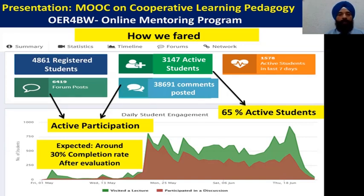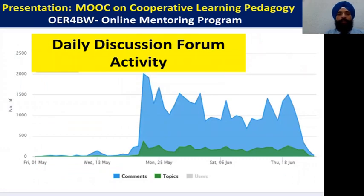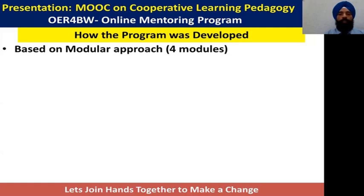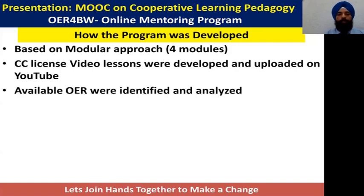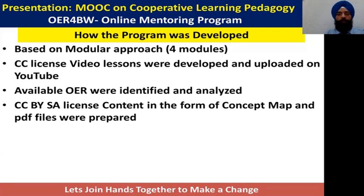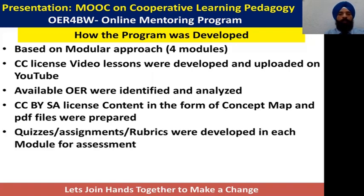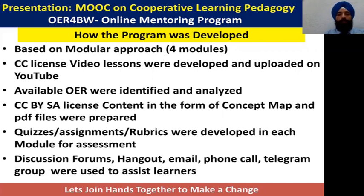These figures are really encouraging and motivating. This slide shows the daily discussion forum activities. Around 2,500 participants were continuously involved in daily discussion forum activities. Based on the modular approach, we developed four modules. Creative Commons licensed video lessons were developed and uploaded on YouTube. Available open educational resources were identified and analyzed. CC BY SA licensed content in the form of concept maps and PDF files were prepared. Quizzes, assignments, and rubrics were developed in each module for continuous assessment of students' progress. Discussion forums, hangouts, emails, phone calls, and Telegram groups were used to assist learners.